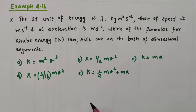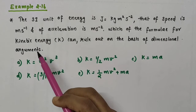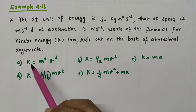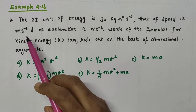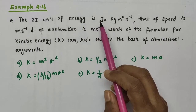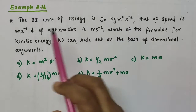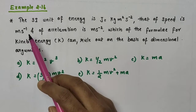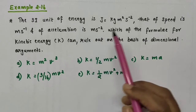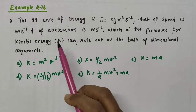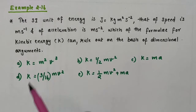Hello everyone. In this video we are going to discuss example 2.16 from Chapter 2, Units and Measurements of Class 11 Physics. The SI unit of energy is Joule, equal to kilogram meter squared second raised to minus 2. The SI unit of speed is meter second raised to minus 1, and of acceleration is meter second raised to minus 2. Which of the formulae for kinetic energy can be ruled out on the basis of dimensional arguments?